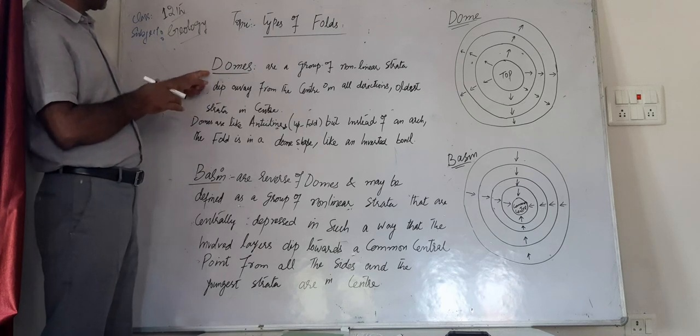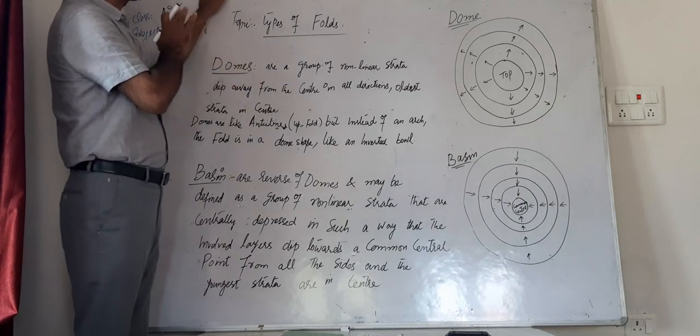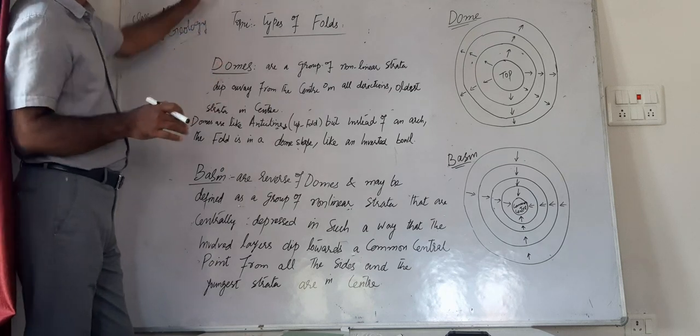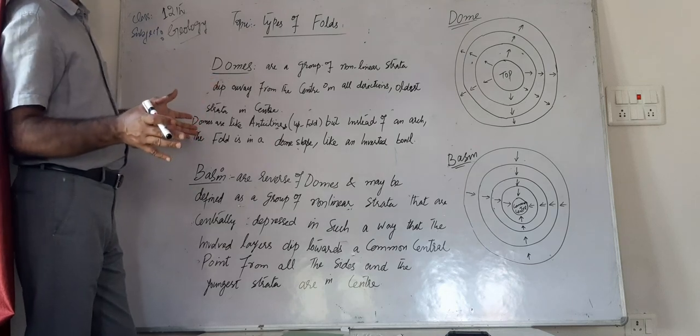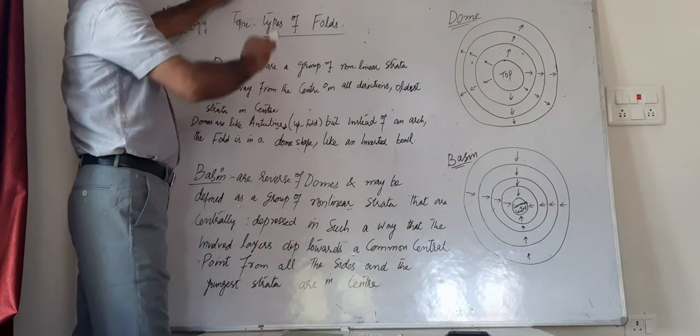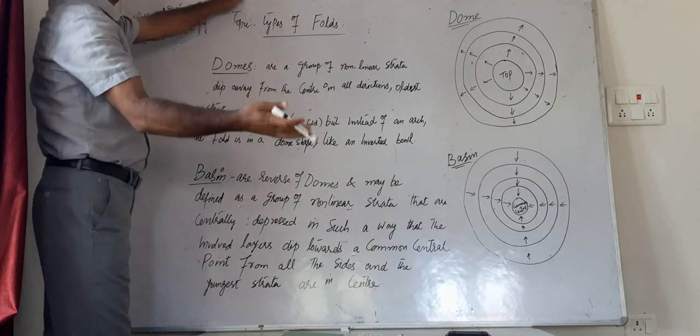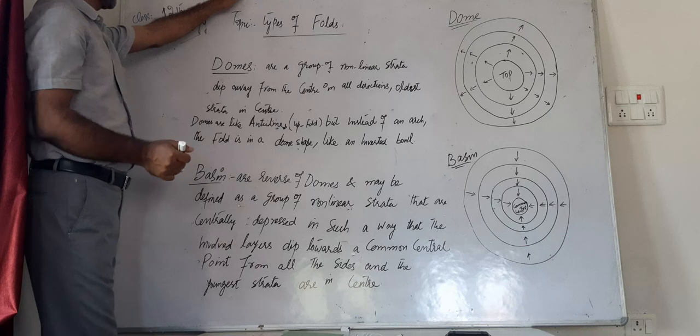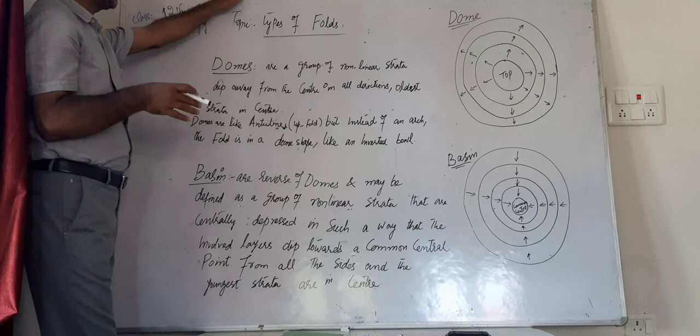Domes are basically a group of nonlinear rock strata which dip away from the center in all directions, while the oldest rock strata remains at the top, with others shown layer after layer beneath the center. Domes are just like anticline upfolds.